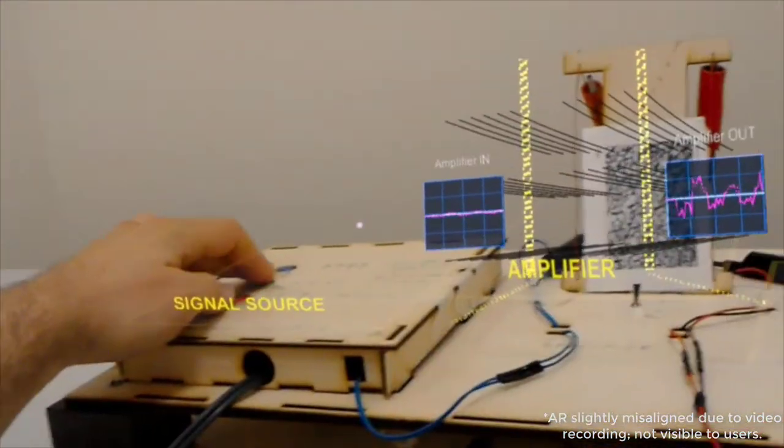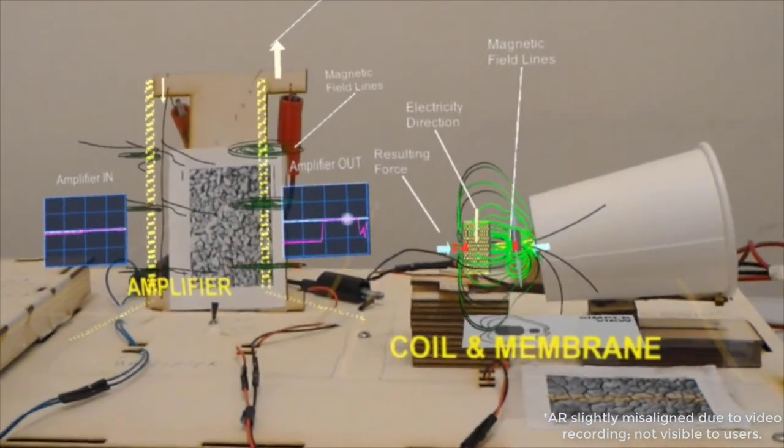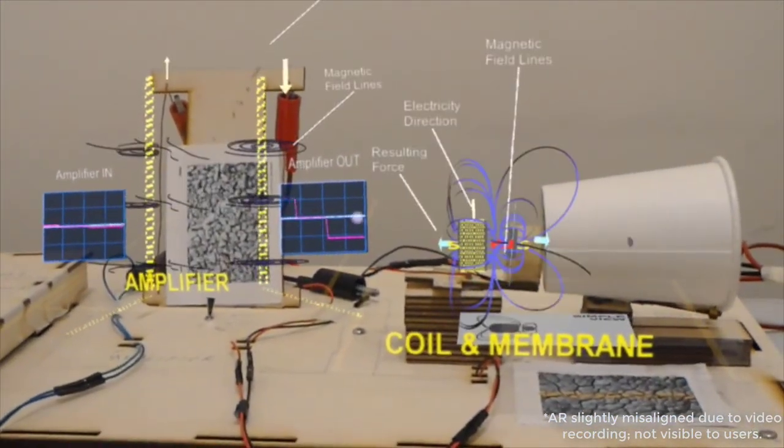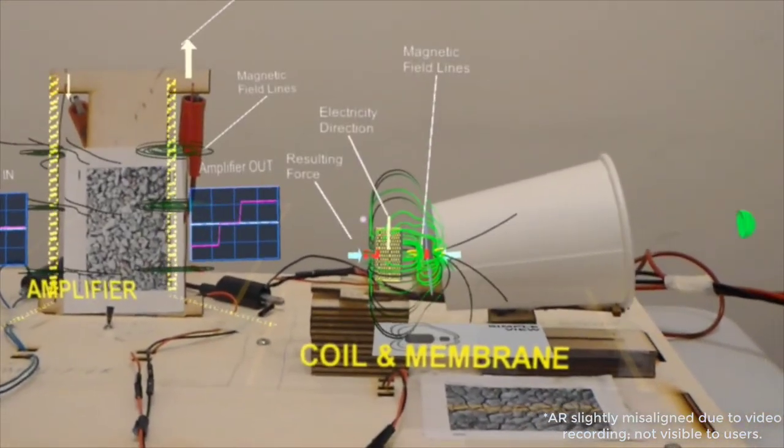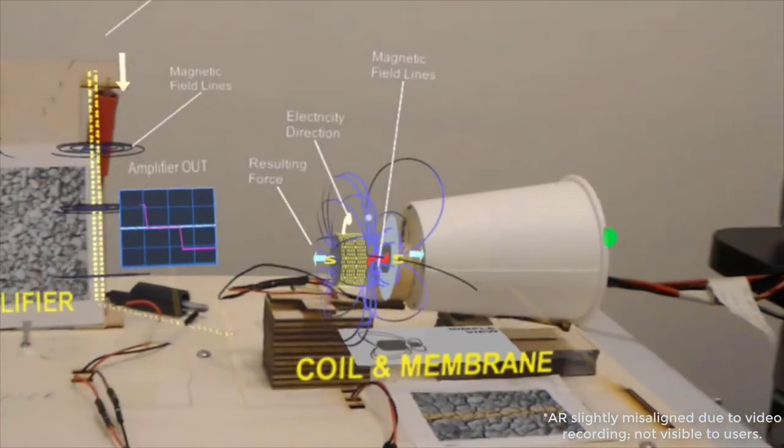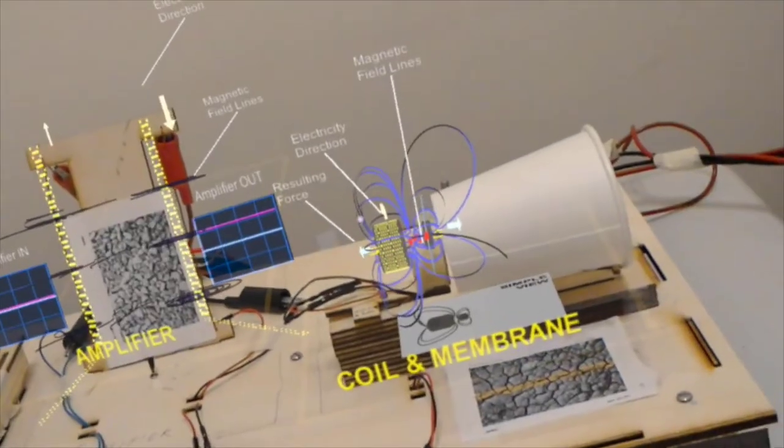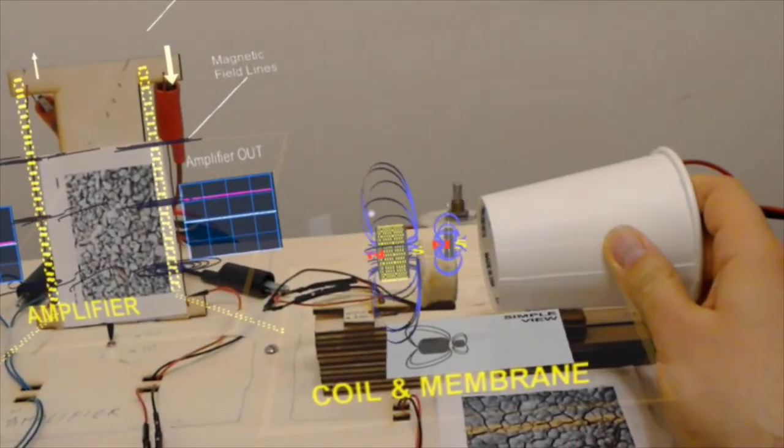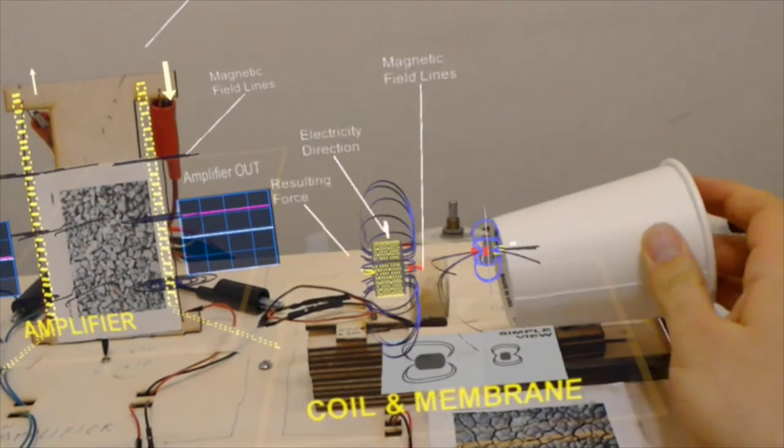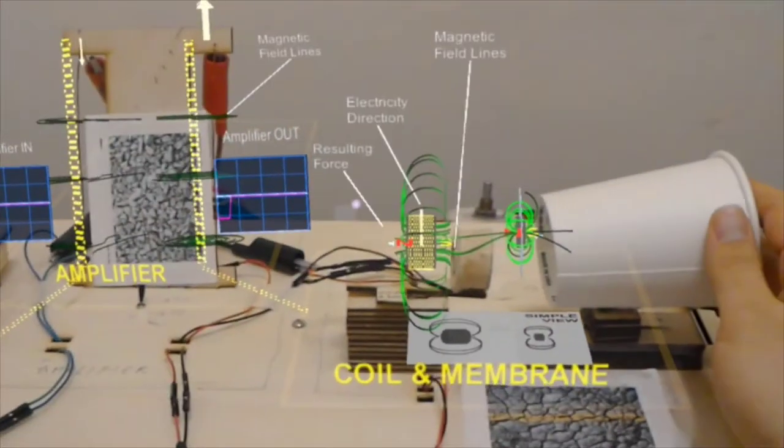The visualizations are responding to changes in the physical objects. For example, we can put electricity in one direction and watch how the magnetic field changes or how the physical object is being influenced. We can also take the physical object and change it and visualize what happens to the changes in magnetic field when we do that.